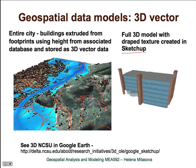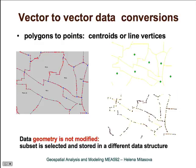You can look up the three-dimensional model of NC State in Google Earth, and you can contribute a building as well, if there are still any that were not fully done. Similarly, as with raster data where we had raster-to-raster conversions involving mostly changing of resolution, we can also convert vector data. We can convert between vector types — between points, lines, and areas. This example shows conversion of areas to points.